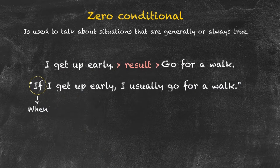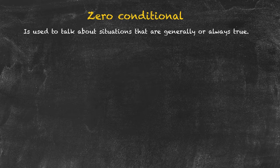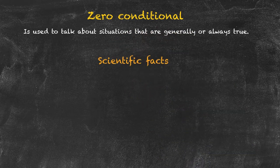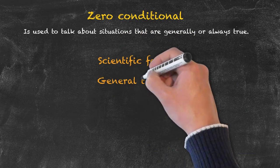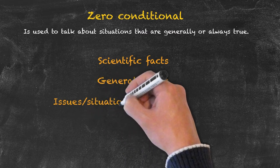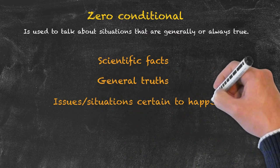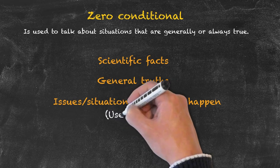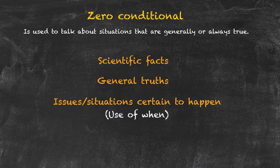So the usages for the zero conditional are: scientific facts, general truths, and situations that are certain or almost certain to happen. The use of 'when' indicates that the situation is certain to happen.